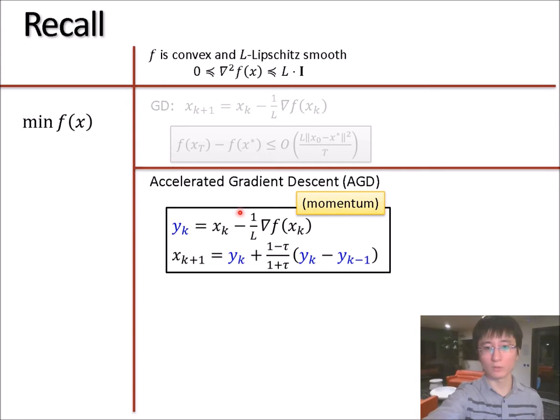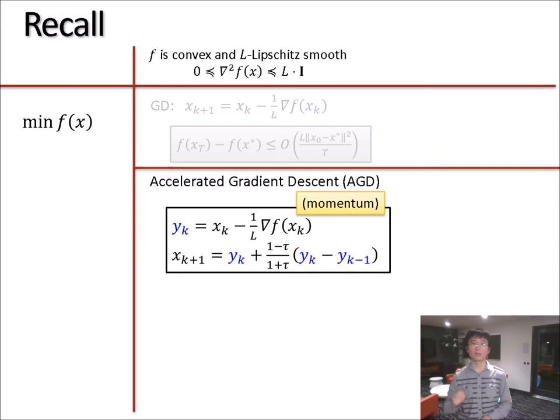In each iteration, you first try to go in the direction of the negative gradient, and you call this point y_k, and then you move to y_k plus a momentum factor times y_k minus y_{k-1}.